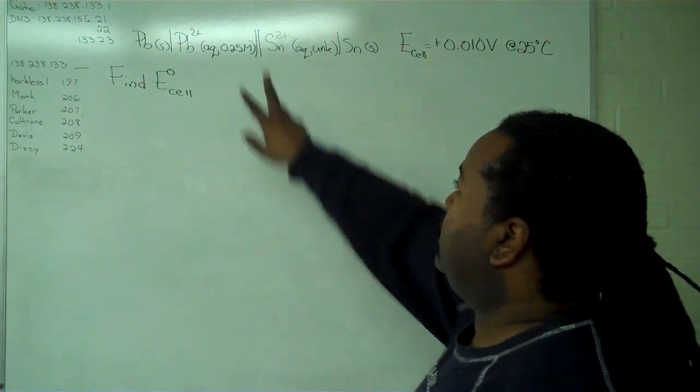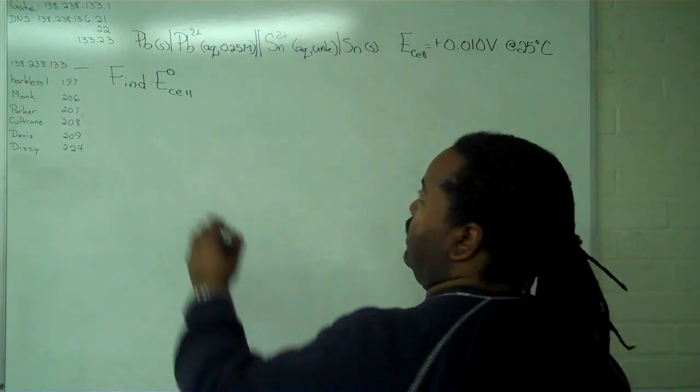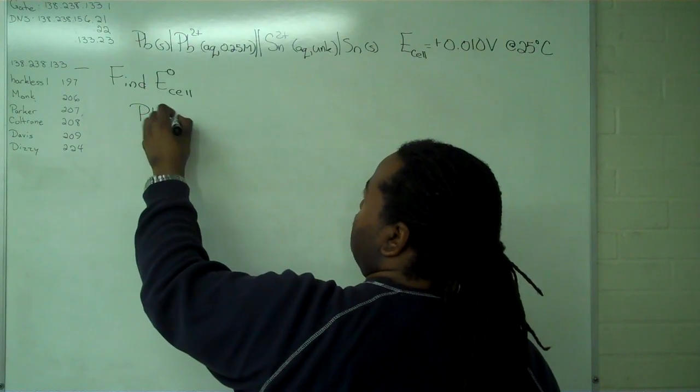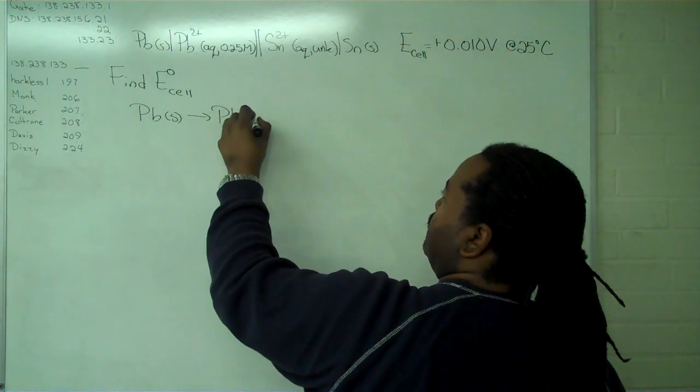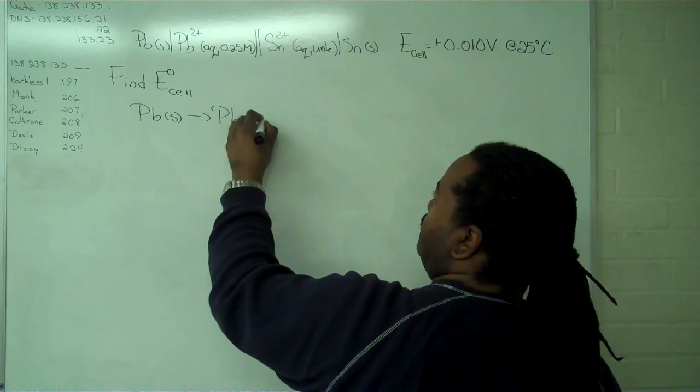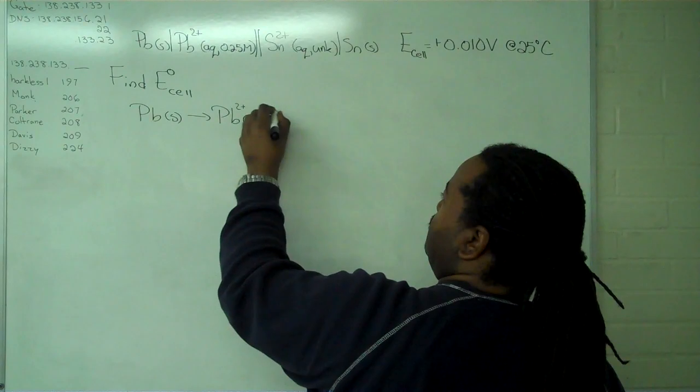To do this, we'll take the half cells and write out their reactions. In this case, it's straightforward—the only thing we need to do is add two electrons.